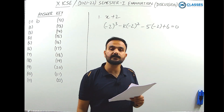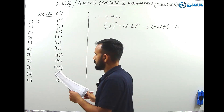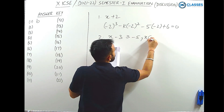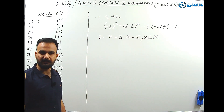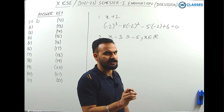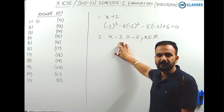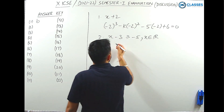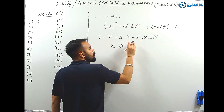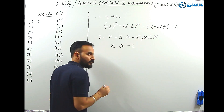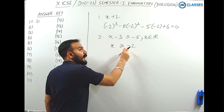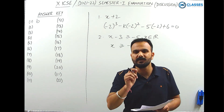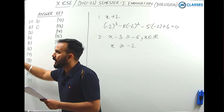Question 2: the solution set of the inequation x - 3 ≥ -5, where x belongs to the set of real numbers. To solve, add 3 to both sides: x ≥ -5 + 3, which gives x ≥ -2. So x is greater than or equal to -2, and option C is the right answer.